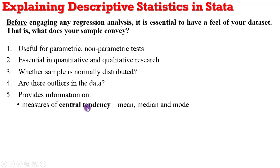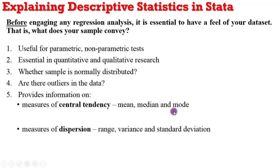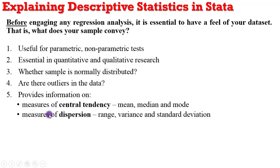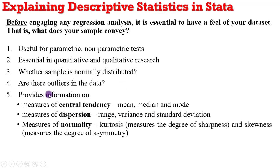Other information you can obtain includes measures of central tendency — that is, values for the mean, the median, and the mode. You can also obtain information on measures of dispersion, that is, the range of your data for that series, as well as the variance and standard deviation. You also want to know measures of normality, that is, information on kurtosis and skewness. That is what we are limiting this tutorial to.